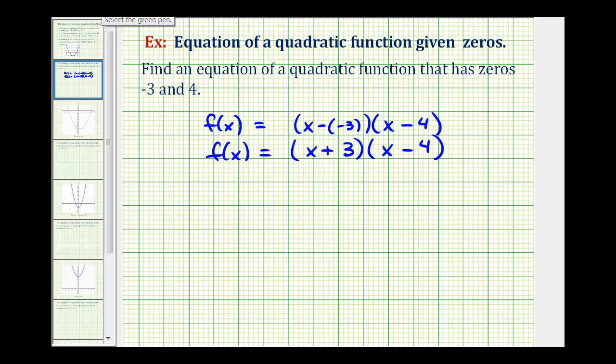Now we'll go ahead and multiply this out, and have a possible quadratic function with the given zeros. Remember, we'll have four products here. One, two, three, four.